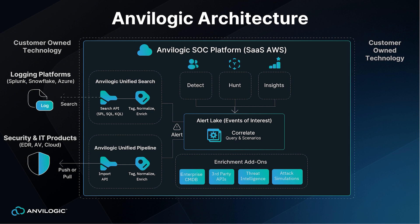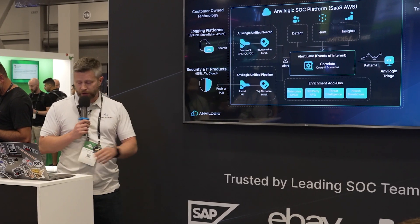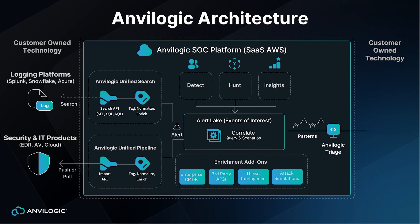We've got a variety of enrichments that can add data as it's coming into that events of interest index so that it has the necessary information. The output comes from the patterns or scenario-based correlations — so this is what's going to really tell you when an adversary is running their TTPs. And finally, that can be output to a case ticketing system of your choice.